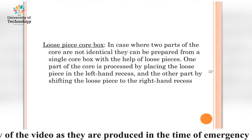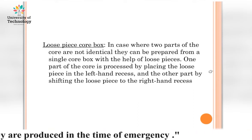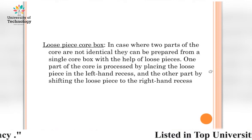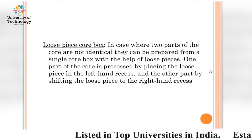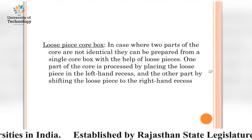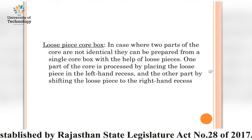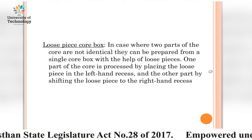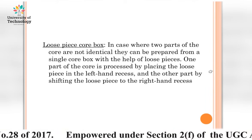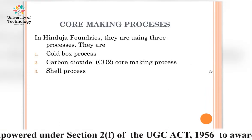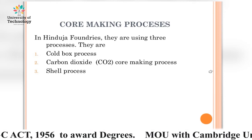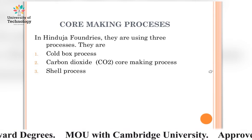The loose piece core box: in cases where two parts of the core are not identical, they can be prepared from a single core box with the help of loose pieces. One part of the core is produced by placing the loose piece in the left-hand recesses, and the other part by shifting the loose piece to the right-hand recesses — that is the loose piece core box.